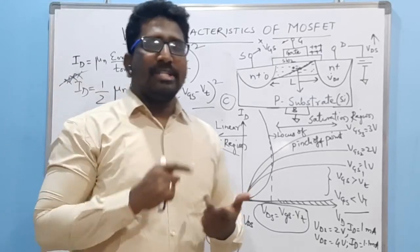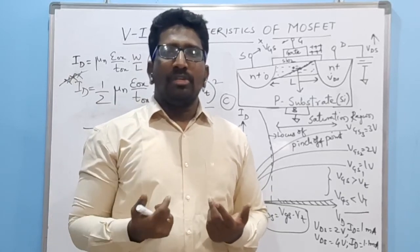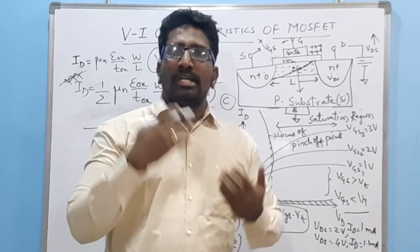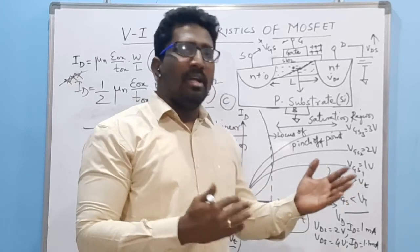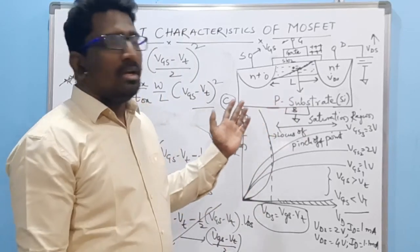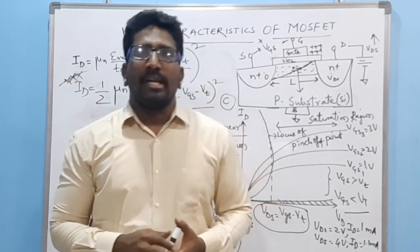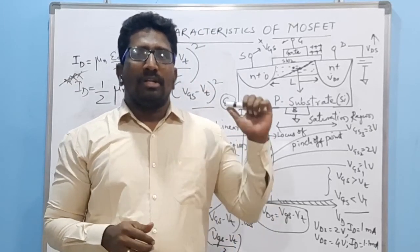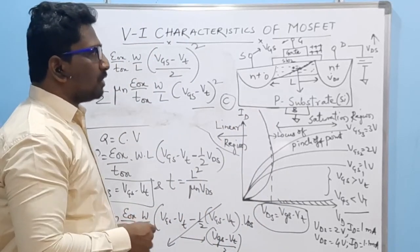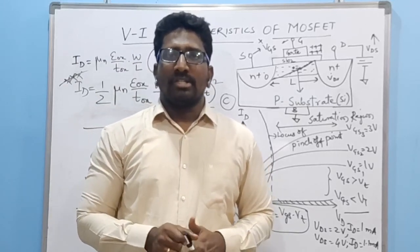In summary: in the cutoff region the transistor acts as an electronic switch with zero current; in the linear region, since drain current increases with VDS, the transistor can be used as an amplifier; and in the saturation region, it is used for switching operations. This completes the derivation of the VI characteristics of a MOSFET.